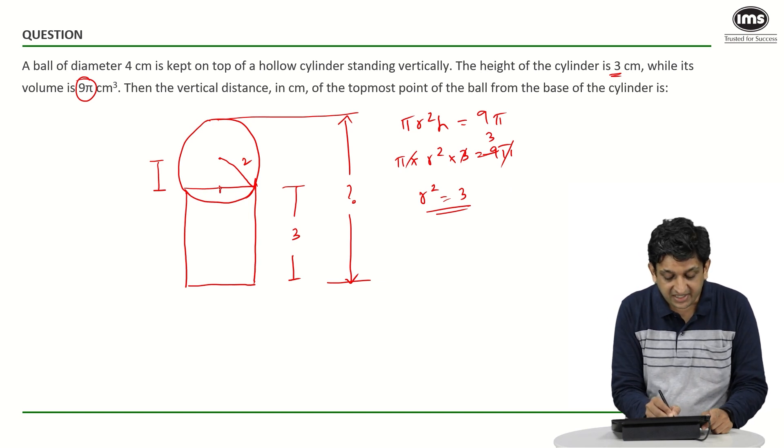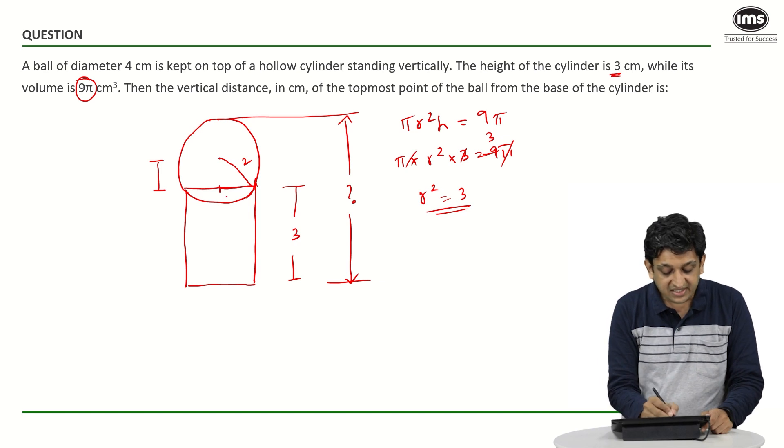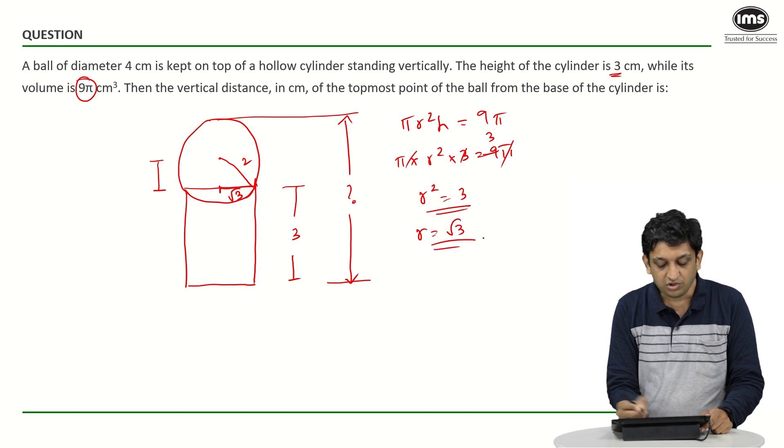Now this r square is nothing but the radius of the top part of the cylinder as well. So r square is 3. So radius will be equal to root of 3. So I am saying r equals root of 3.